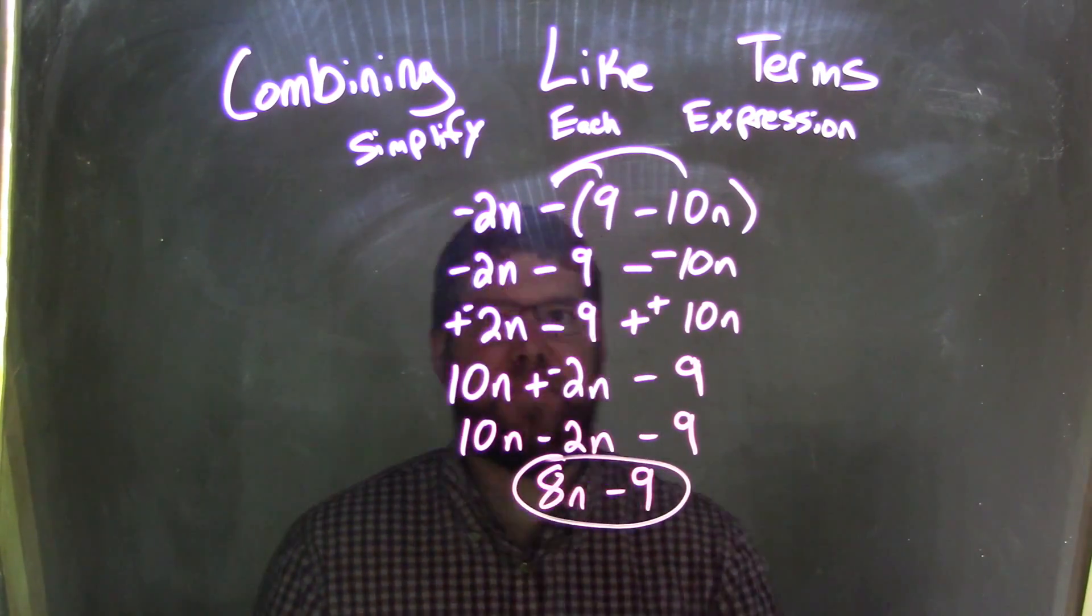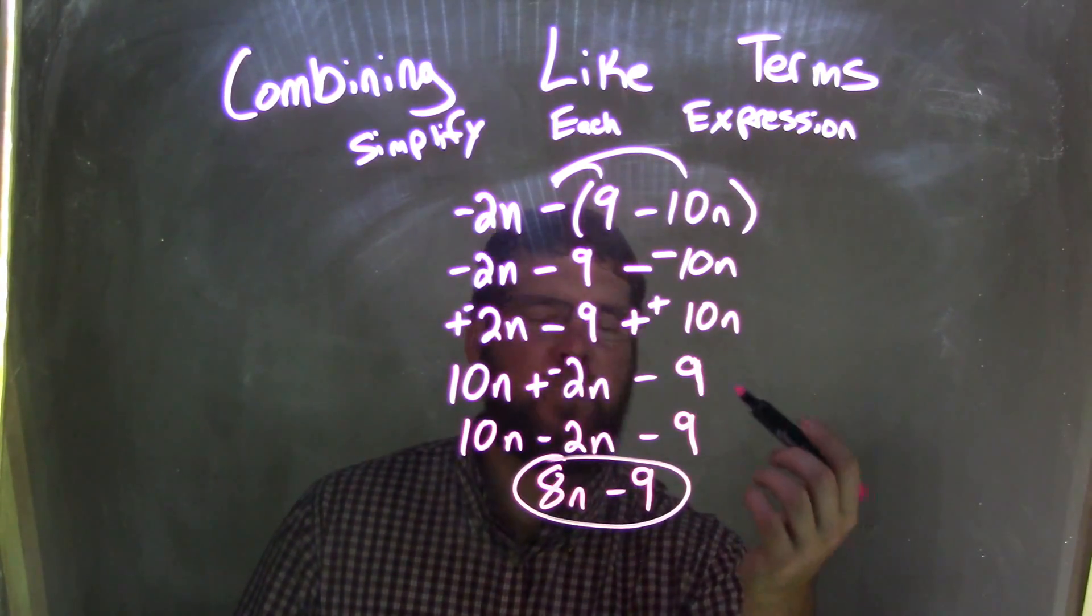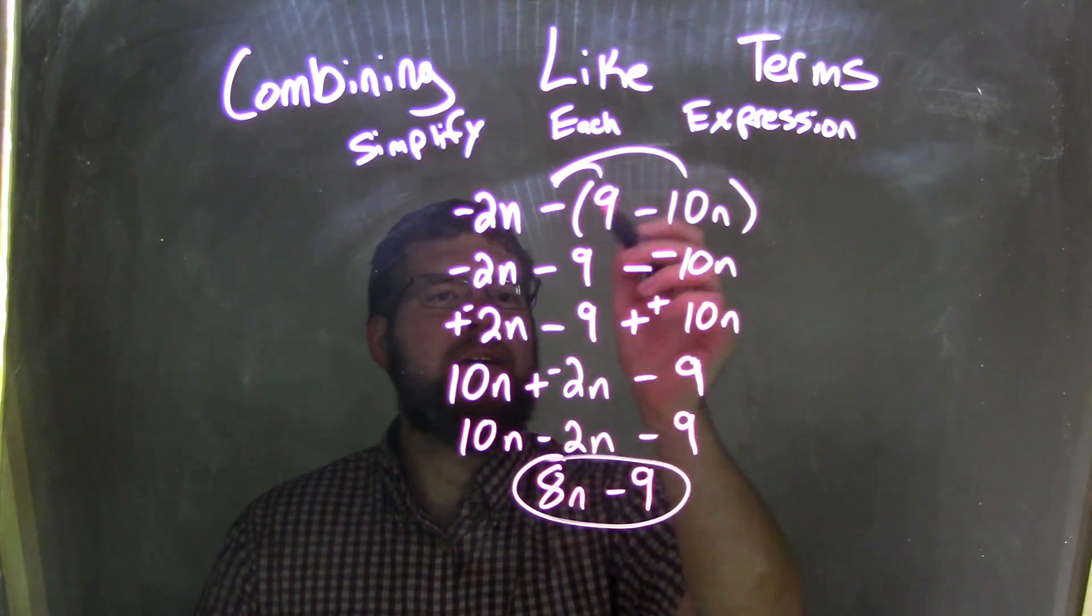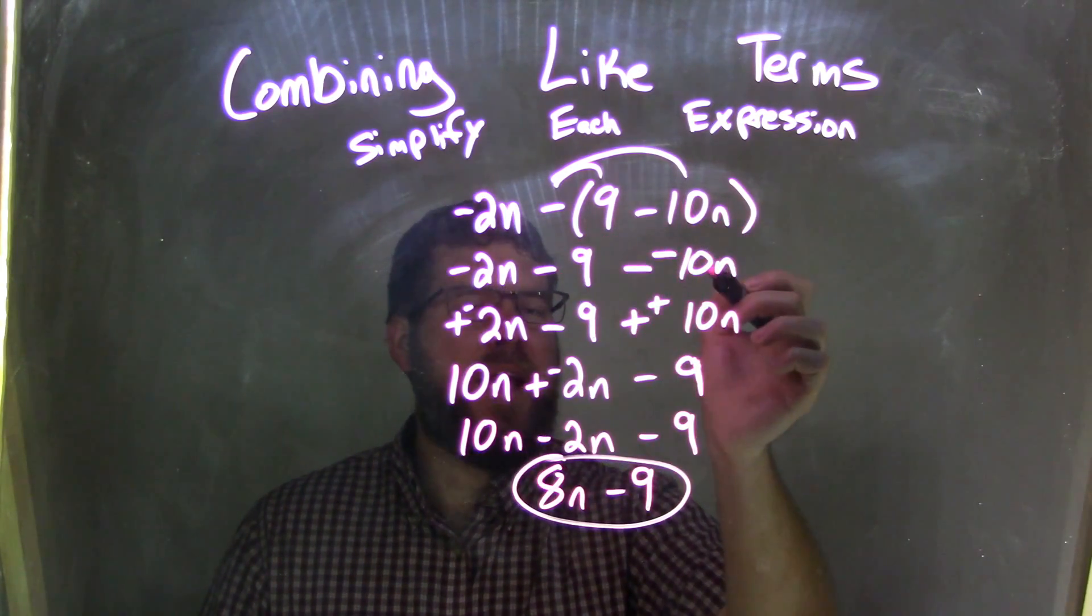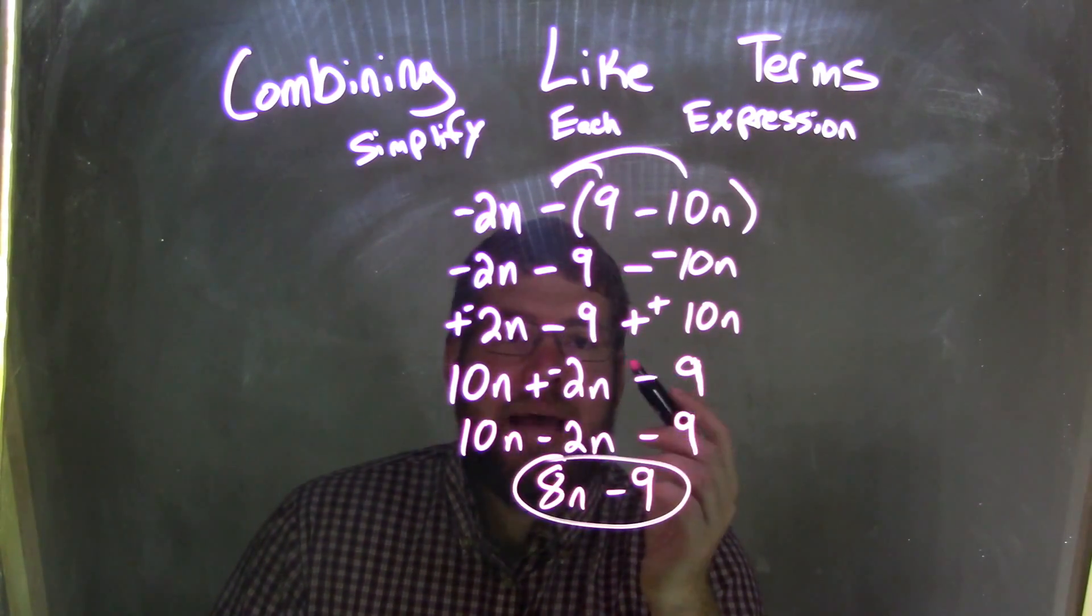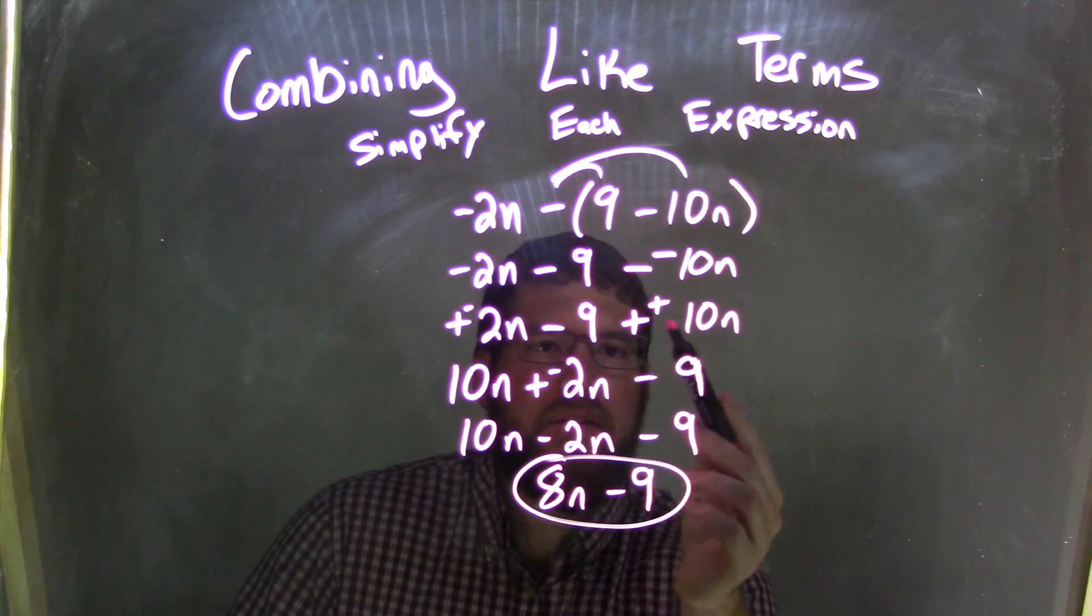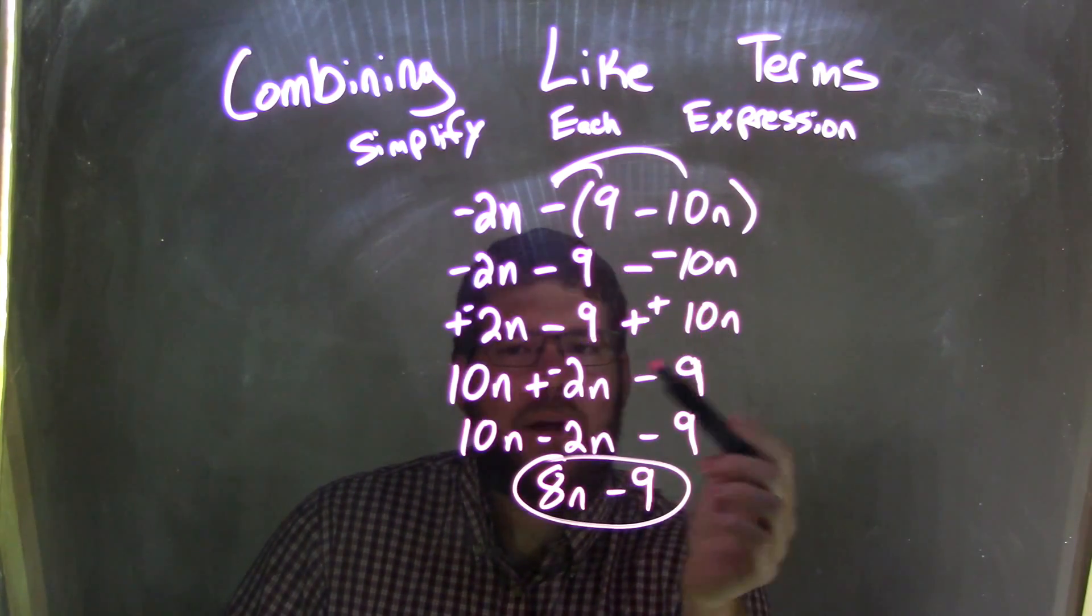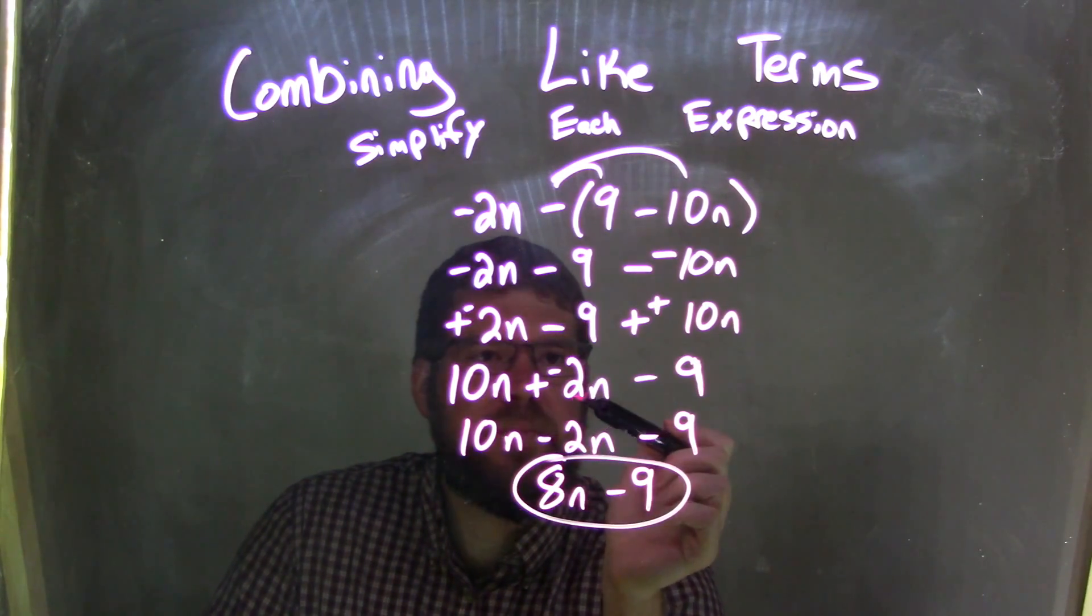So let's recap here. I needed to distribute that minus sign first. I took my time for this. Subtract, so I had negative 2n minus 9, distribute that, and then minus a negative 10n. So it brought that subtraction over. Now I knew that minus and negative was adding a positive, so we have plus a positive 10n. Using the commutative property, I wrote that first, making that subtraction plus a negative 2n, and then minus 9.